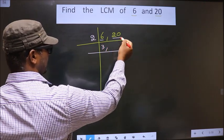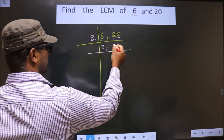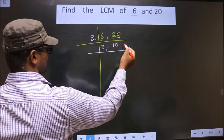Now, here we have 20. When do we get 20 in 2 table? 2, 10, 20.